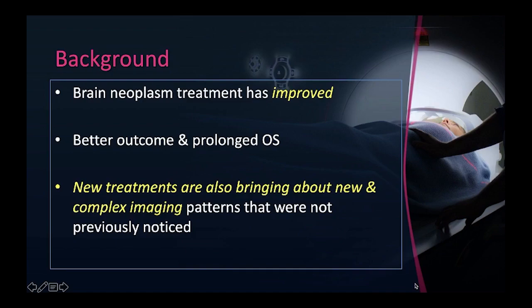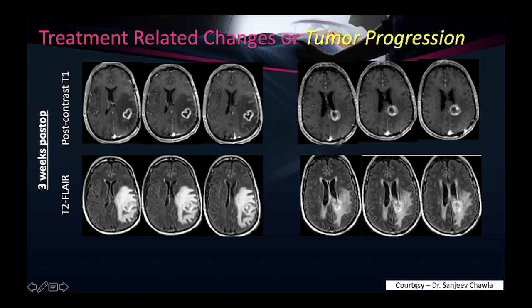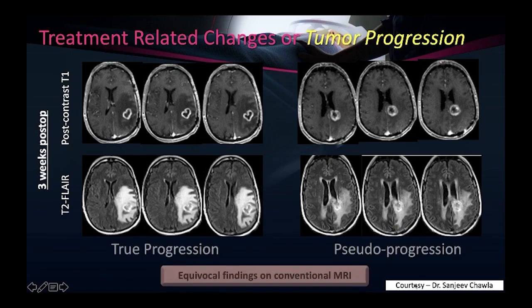As a background, brain neoplasm treatment has improved over the years, leading to better outcomes and prolonged overall survival. But these newer treatments are also bringing about new and complex imaging patterns not previously noted. I'm showing two follow-up glioblastoma cases — top panel is post-contrast T1, bottom is T2 FLAIR — and the enhancement pattern and extent of FLAIR edema look very similar, yet one patient has recurrent tumor (true progression) and the other has treatment effects known as pseudoprogression. Conventional imaging findings are thus somewhat equivocal.